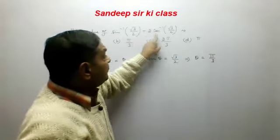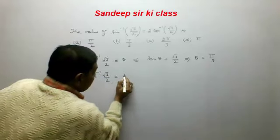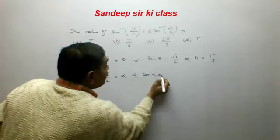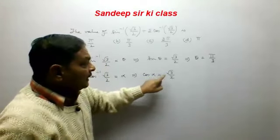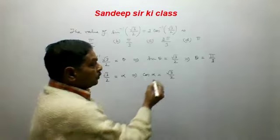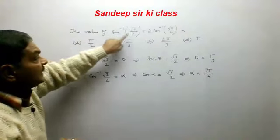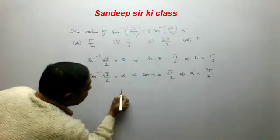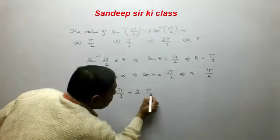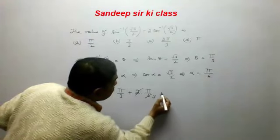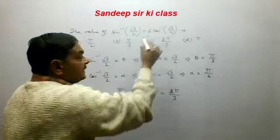For the second term, cos⁻¹(√3/2): if cos α = √3/2, then α = 30° = π/6. So the expression becomes π/3 + 2·(π/6) = π/3 + π/3 = 2π/3. Option C is the correct answer.